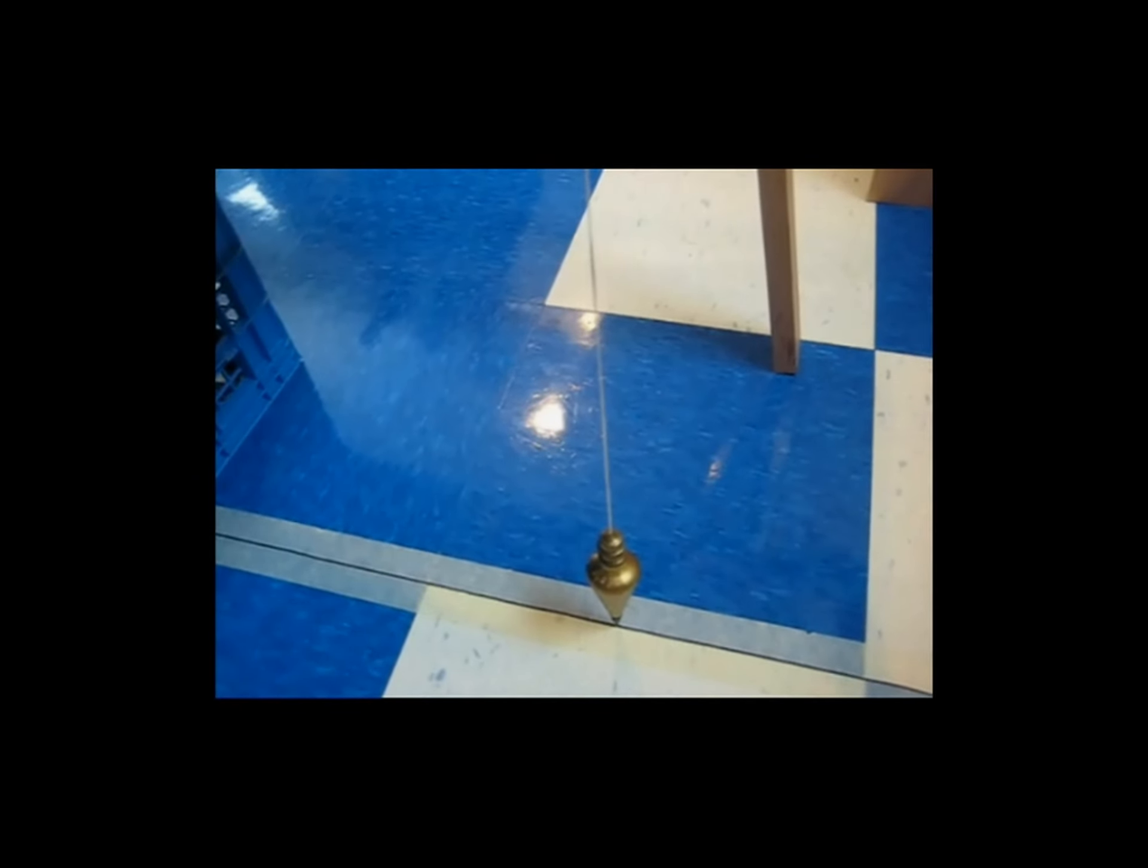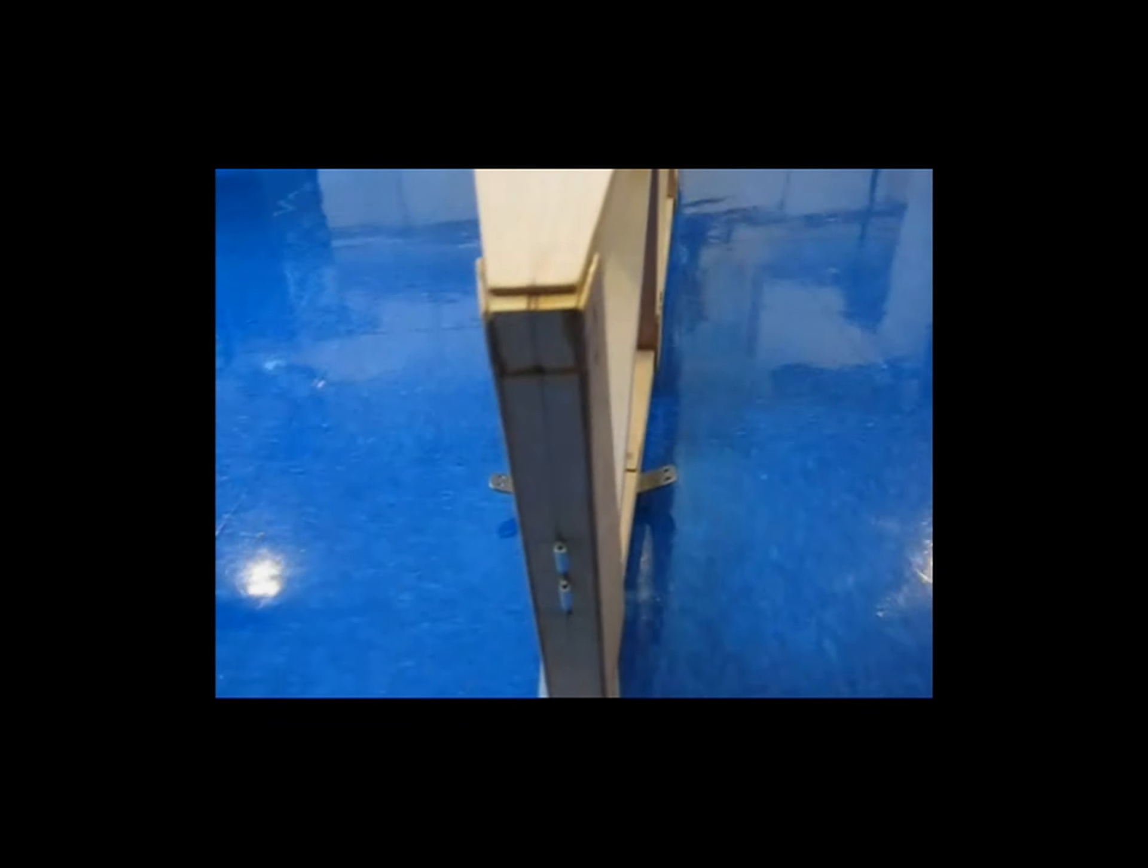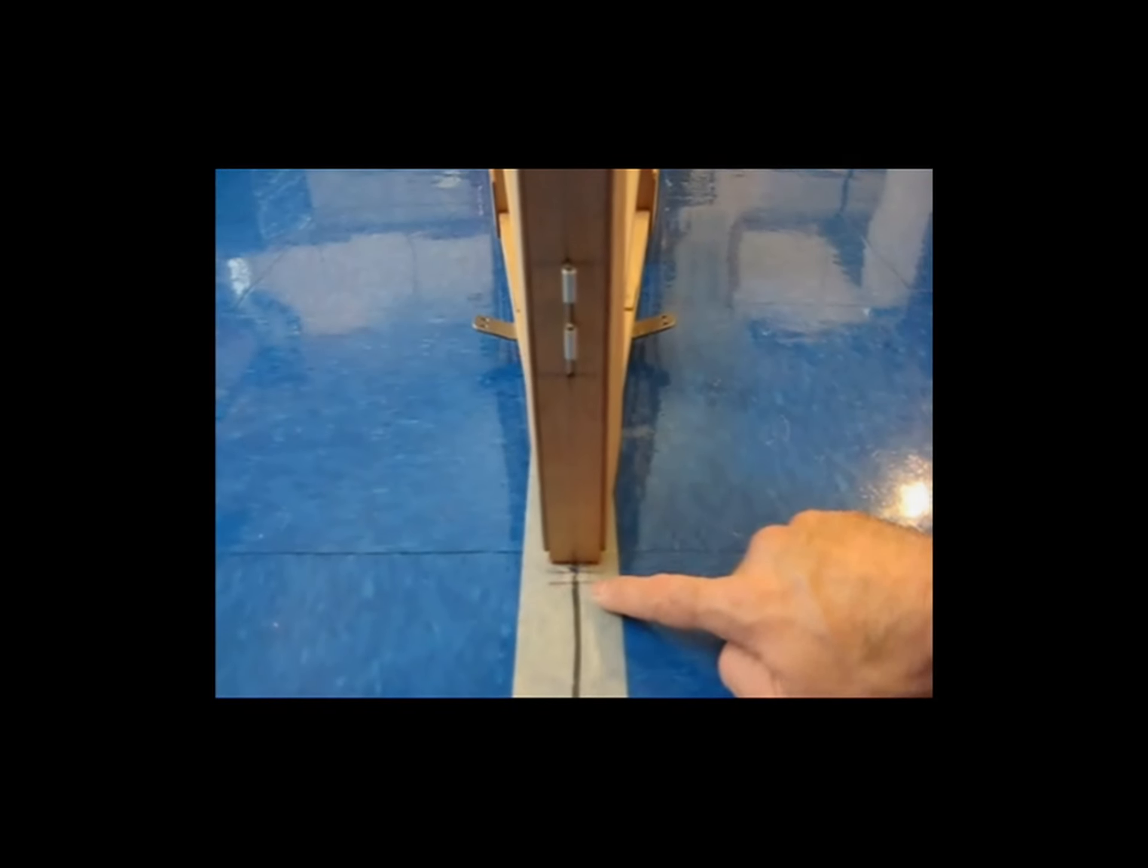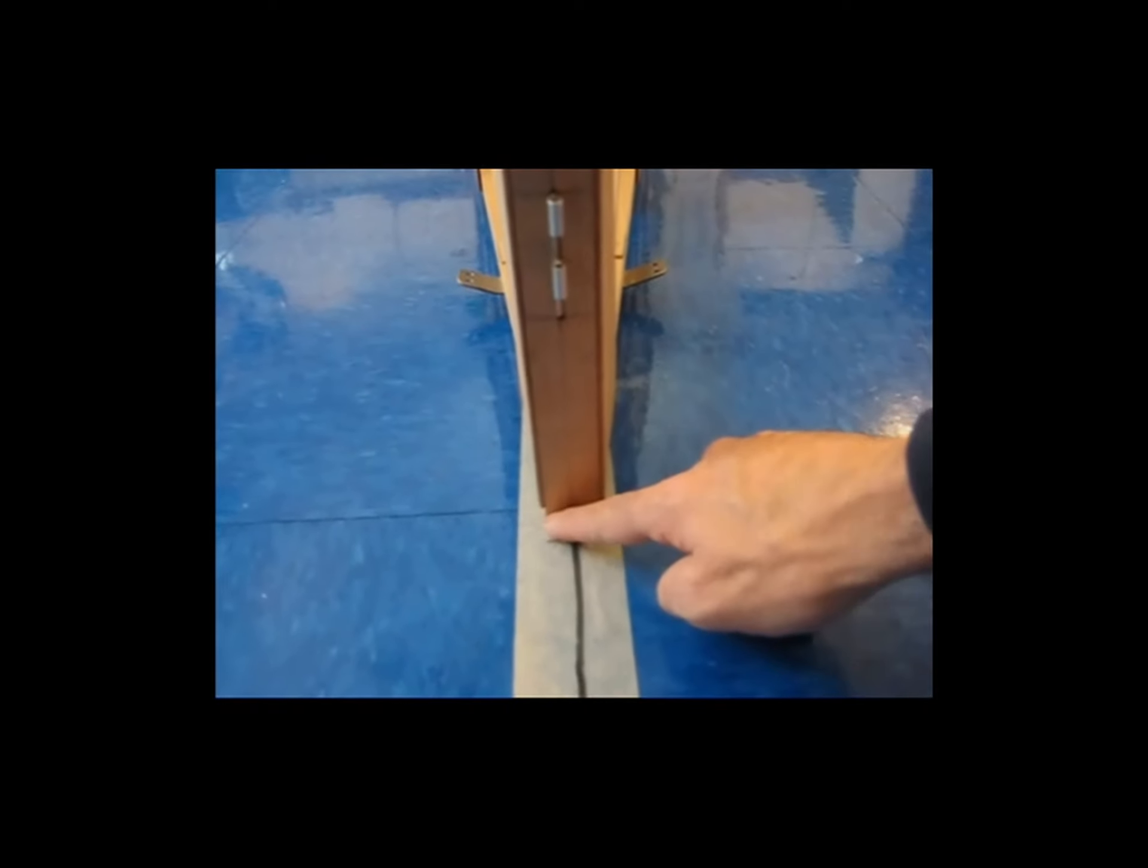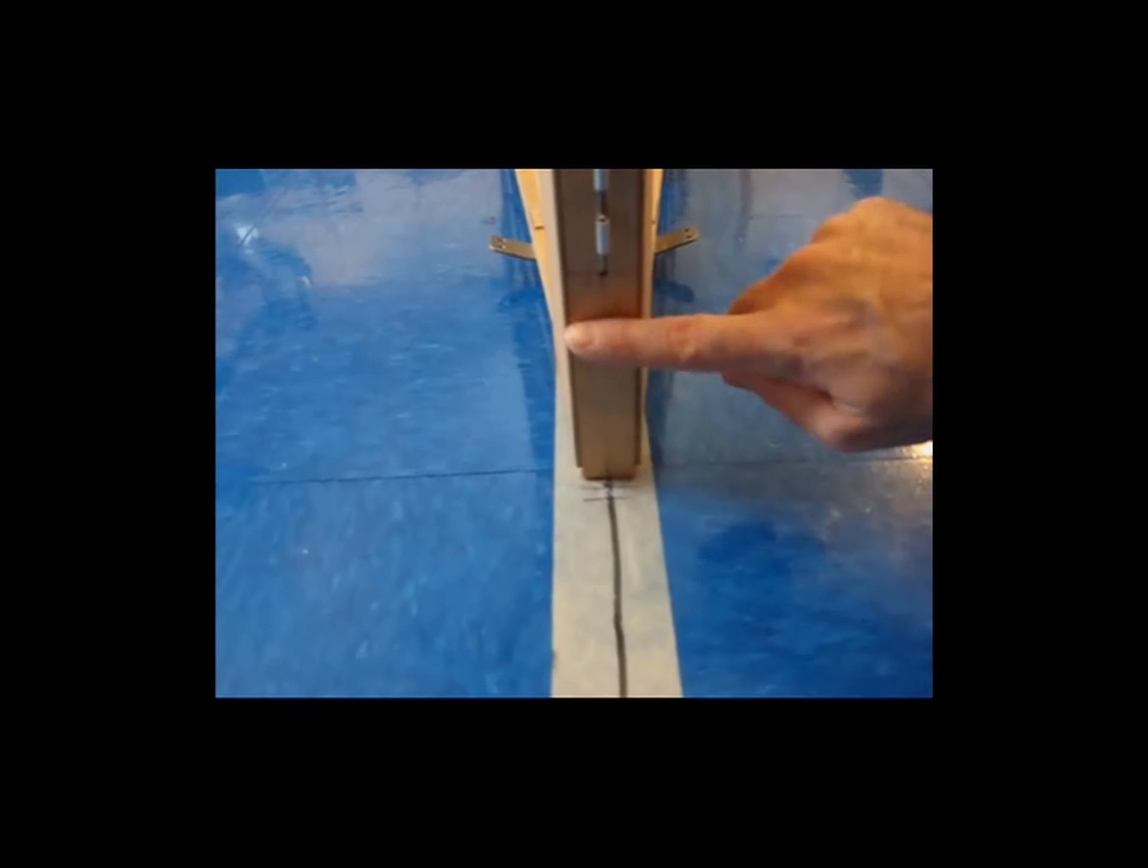So I've got the plumb bob hung off of the center line of the fuselage, and I have it lined up with the reference mark on the floor. And then if you follow me on back, I've got my tail post physically on the floor. And I have my reference line here still on the tail post, and that is in line with this reference line here that's on the floor.